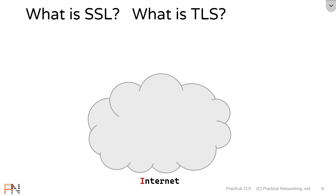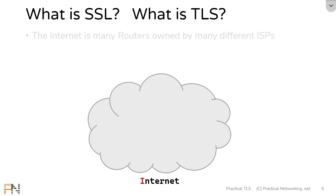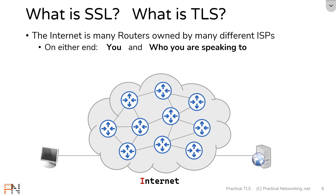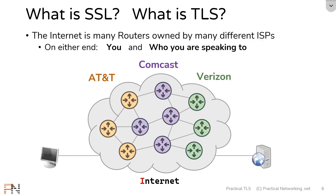Here is the internet. The internet is often depicted as this cloud illustration, but inside the internet is actually just a bunch of different routers that are handing data off to one another. On either side of the internet is you and who you're speaking to. All of these routers are owned by different ISPs, which stands for Internet Service Provider. These ISPs are in charge of maintaining these routers which are going to hand data off to one another.